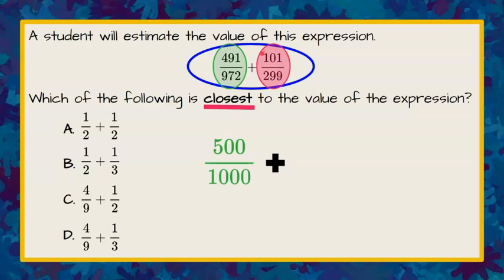Now we're going to add our second fraction. The numerator is 101. This would be closest to 100. And 299, our denominator, I would round to 300. So again, we are estimating this expression to be equivalent to this.